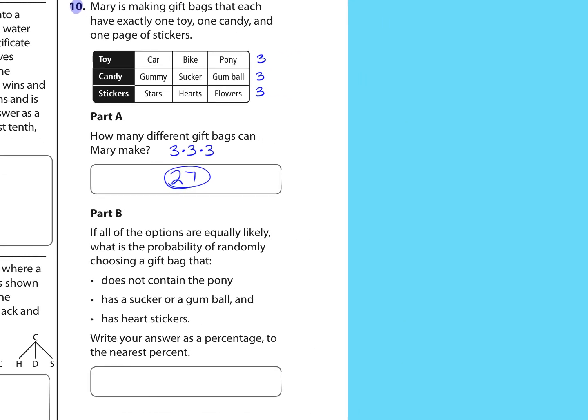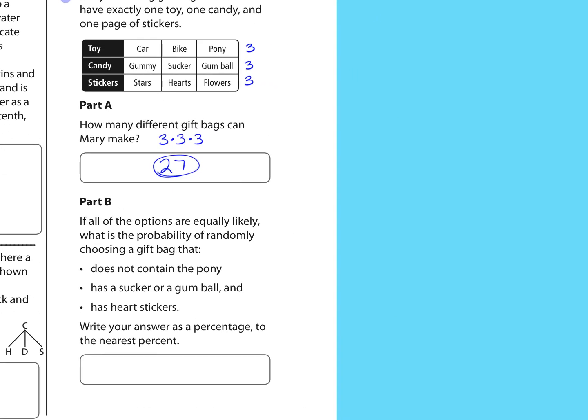Part B, if all the options are equally likely, what's the probability of randomly choosing a gift bag that does not contain the pony? Okay, well, she could choose from 2 out of the 3 toys, has a sucker or a gumball, that would be 2 out of the 3 candies, and has heart stickers. That's 1 out of the 3 stickers. So we'll multiply. 2 thirds times 2 thirds times 1 third is 4 over 27. And that comes out to 0.148 as a decimal. We'll move our decimal two places right, and it rounds to about 15%.